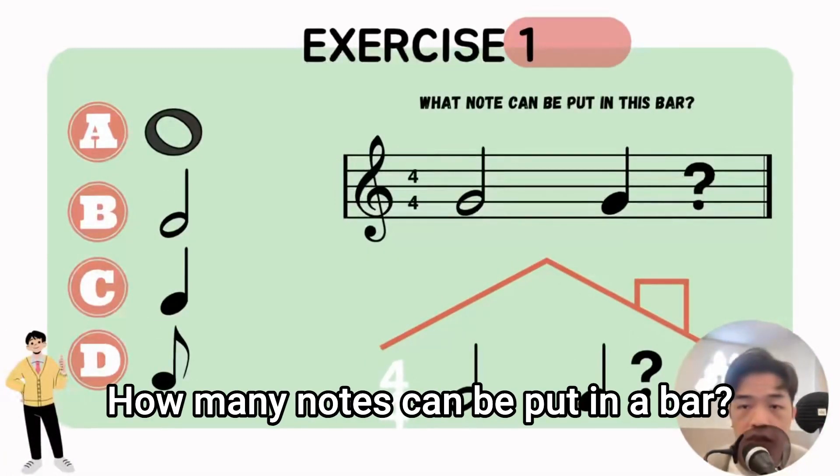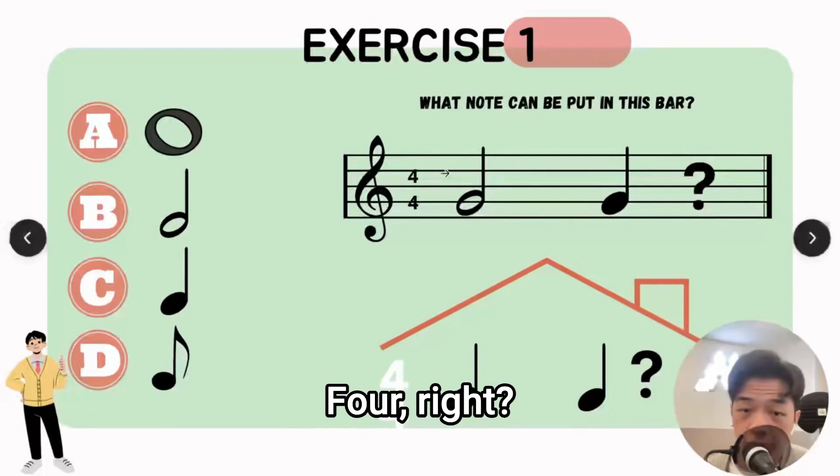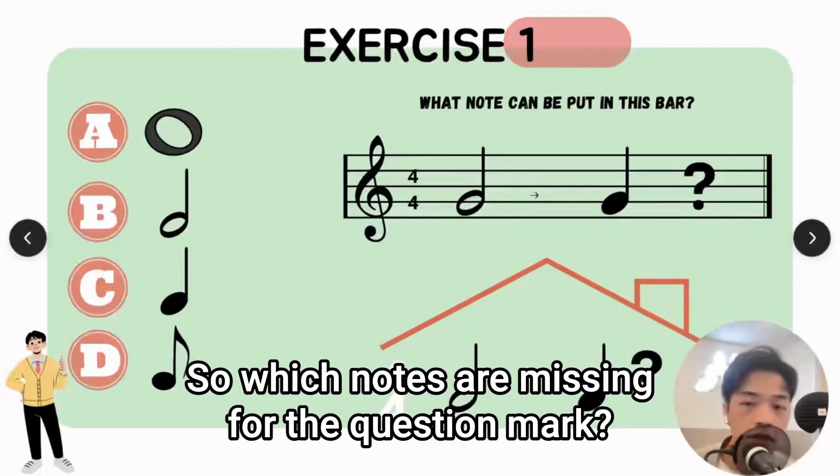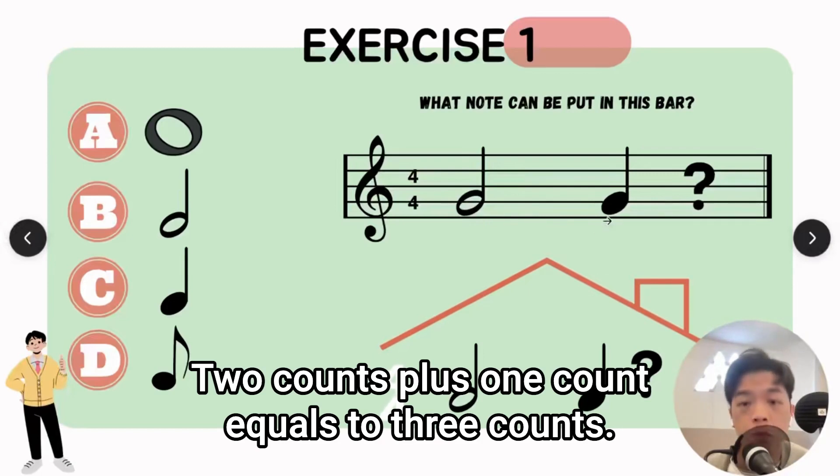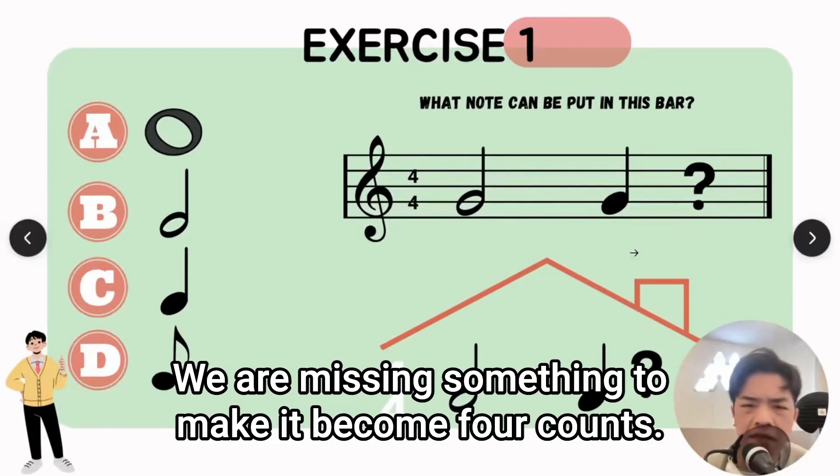How many notes can be put in a bar? Four, right. So which note is missing for the question mark? Do some math. Two counts plus one count equals to three counts. We're missing something to make it become four counts. We miss a crotchet, right? So the answer is C, crotchet.